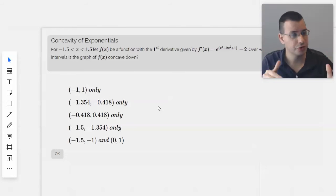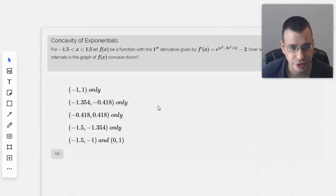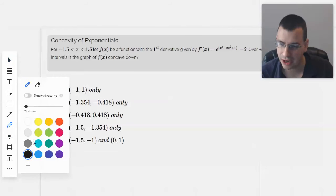First derivative gives you slope. A positive first derivative is a positive slope, negative first derivative is a negative slope. The second derivative gives you concavity. Positive concavity gives you concave up, and negative concavity gives you concave down.